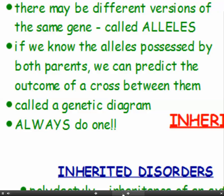If we know the alleles possessed by both parents, then we can predict the outcome of a cross between them using a genetic diagram. In any exam questions about this, always draw a genetic diagram, because quite often you can get nearly all your marks, if not all your marks, just by doing the genetic diagram correctly. We'll see how to do one in a minute.